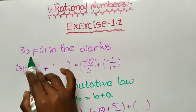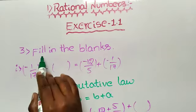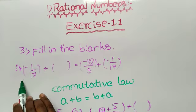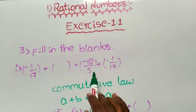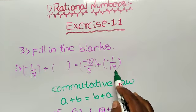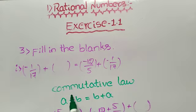Now we will discuss the third problem in Exercise 1.1: fill in the blanks. In that first problem, -1/17 + ( ) = -12/5 + (-1/17). Here we are using the commutative law.